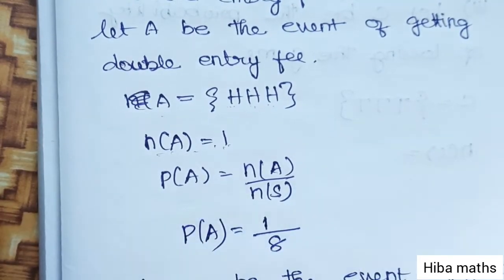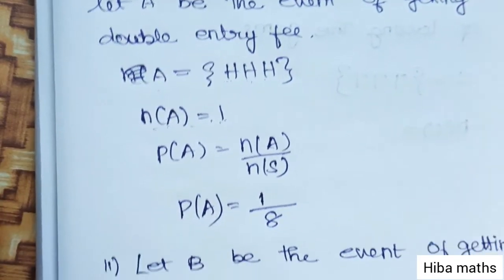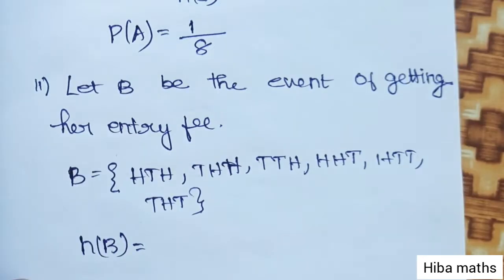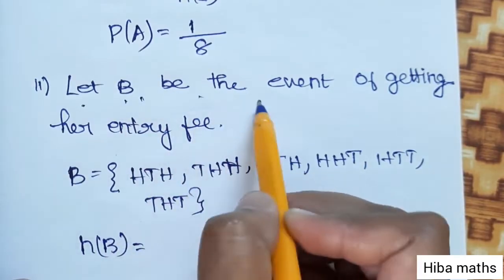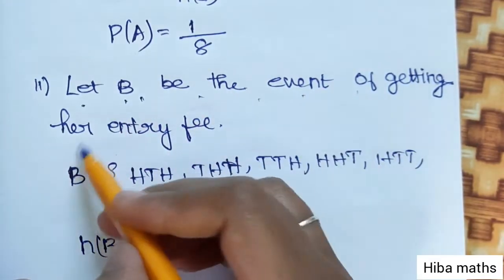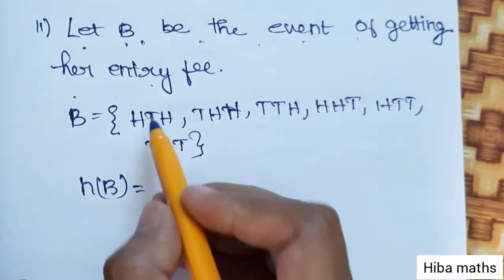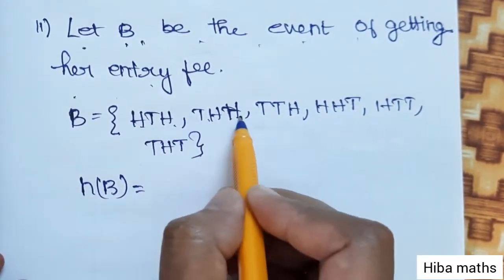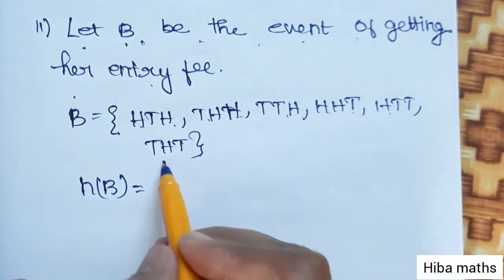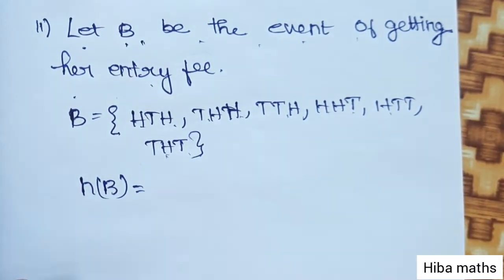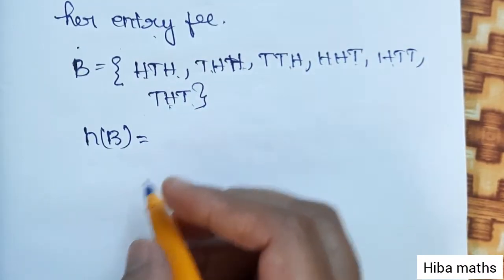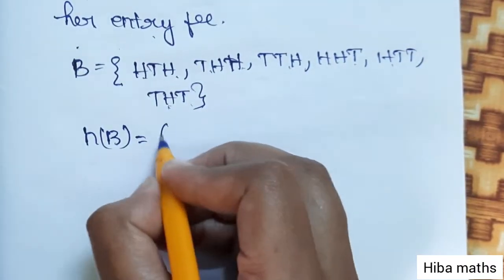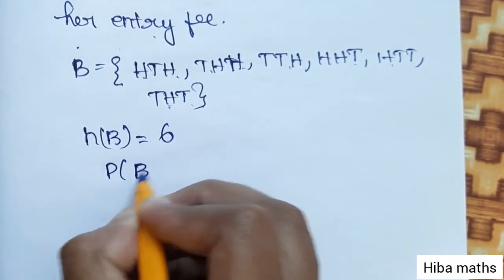n(A) is 1 and n(S) is 8. So P(A) = 1/8. Now find the probability of getting only her entry fees back. Let B be the event of getting her entry fees. The outcomes with 1 or 2 heads are available — total 6 outcomes. So n(B) = 6.